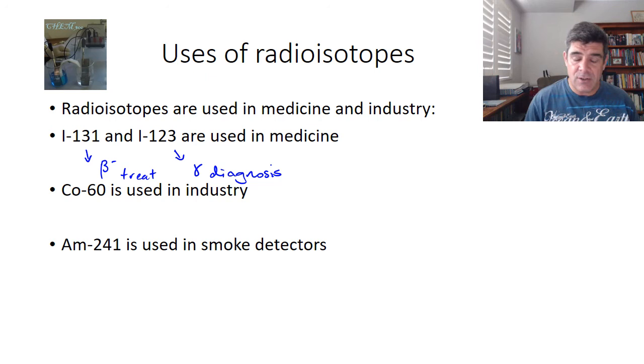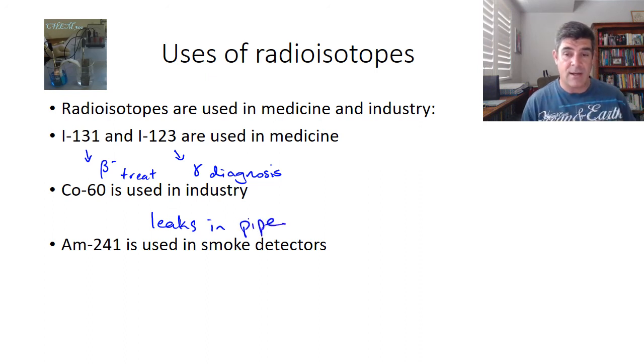Cobalt-60 is used in industry, particularly for detecting leaks in pipes. We can look at using equipment that's going to detect any concentration of this particular isotope in an area, which is telling us it's leaking out of a particular area.